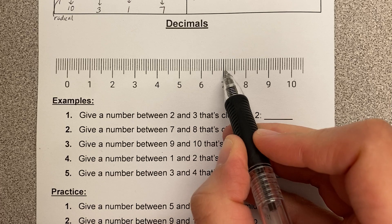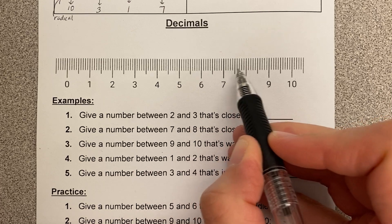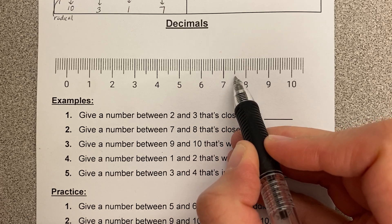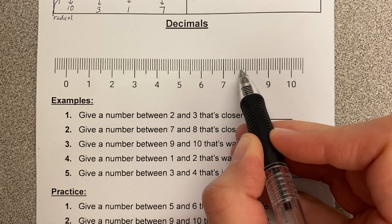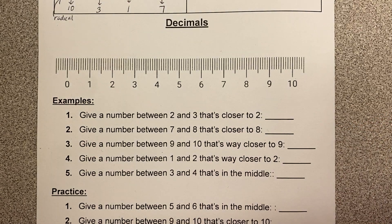And the same is true here. This is 7.1, 7.2, 7.3, 7.4, and so on. This number in the middle is 7.5, then 0.6, 0.7, 0.8, 0.9, and 8.